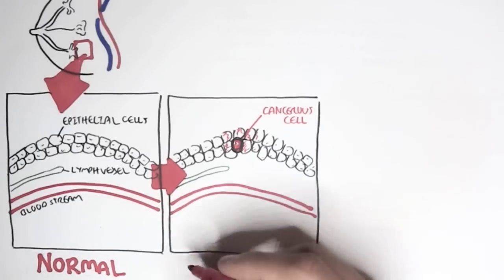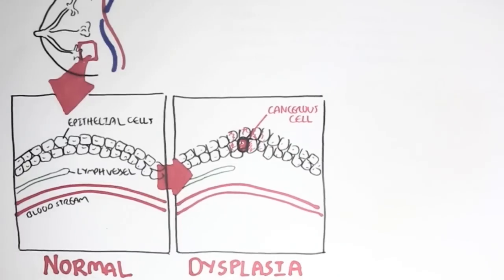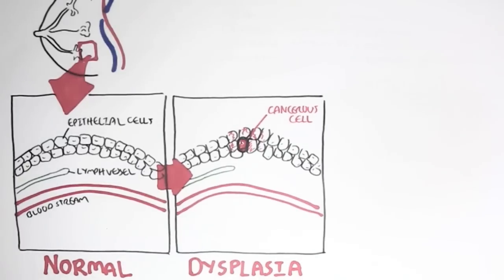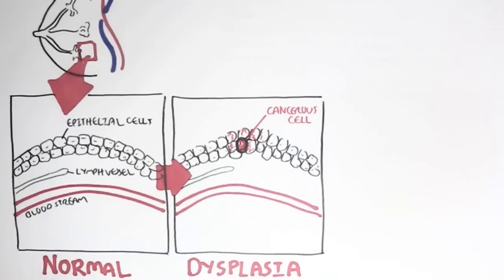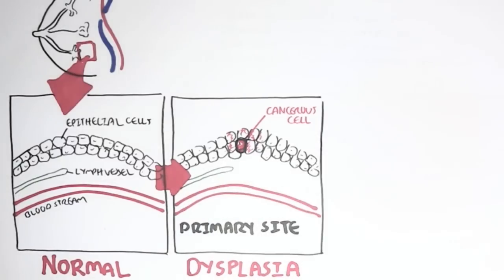This is referred to as dysplasia, where we have abnormal tissue development. The cancer cell, where it begins, is known as the primary site. And so if a cancer cell were to move or spread, the second area would be referred to as the secondary site.